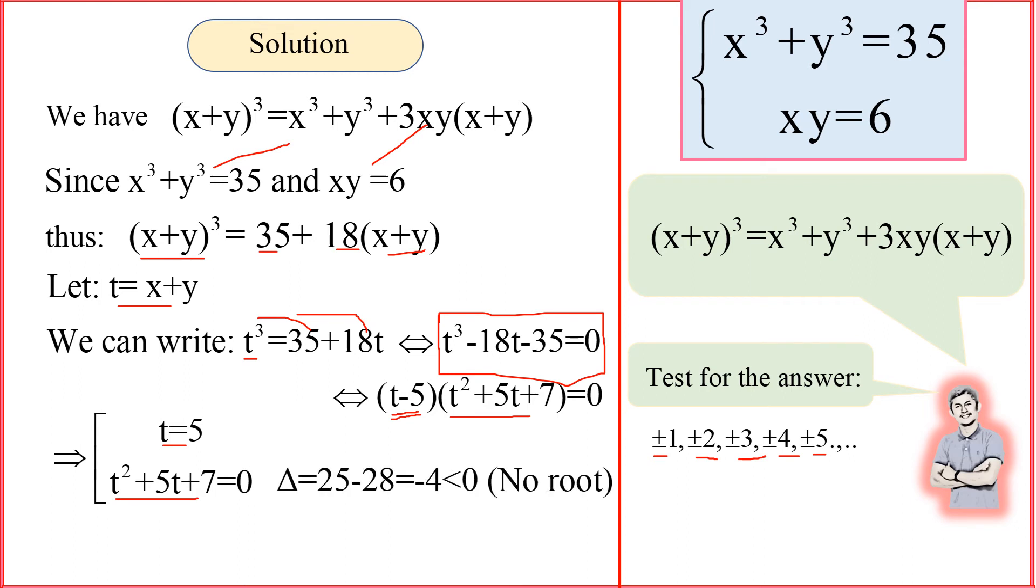But, sadly, when we solve the second equation, which is less than 0, it's negative. When delta is negative, it doesn't have a root. So, the root only has t = 5, and that's the case.